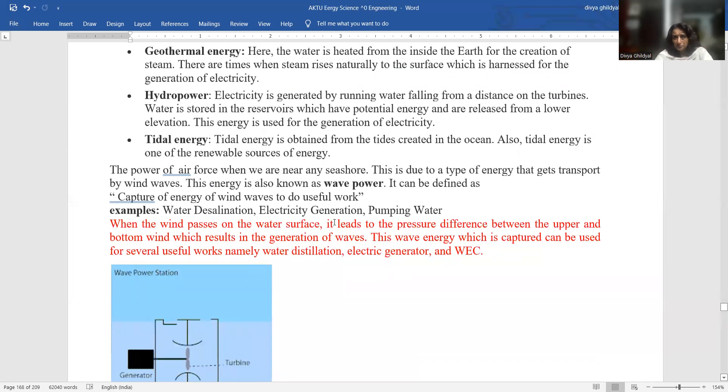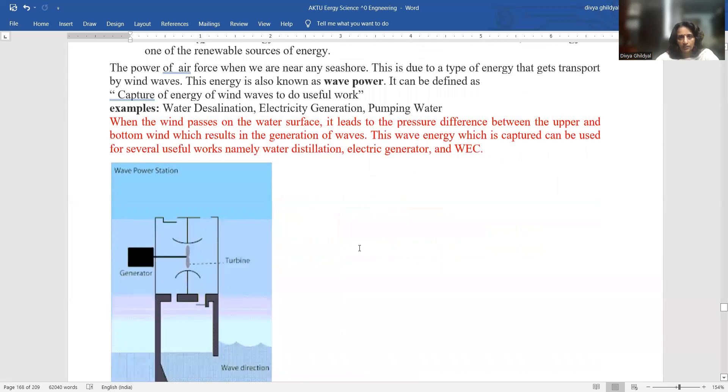When the power of air force is generated with the help of waves near a seashore, wind passes over the water surface leading to pressure difference between the upper and bottom wind, which results in the generation of winds. This wave energy can be used for several useful works like water distillation, electric generator, etc.